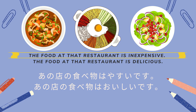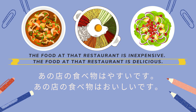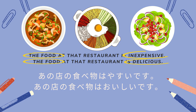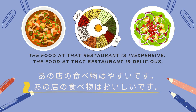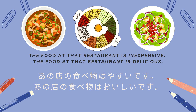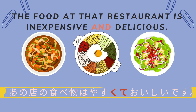The food at that restaurant is inexpensive. The food at that restaurant is delicious. Same topic, but different adjectives. In Japanese: 'Ano mise no tabemono wa yasui desu' and 'Ano mise no tabemono wa oishii desu.' We will use the Te-form to combine these two sentences since they share the same topic. The combined sentence becomes: 'Ano mise no tabemono wa yasukute oishii desu.'